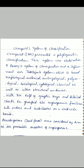Cronquist in 1981 presented a phylogenetic classification. This system was an elaboration of Bessey's system of classification and a refinement over Takhtajan's system, which we have studied in the previous lecture. It is based on morphological, anatomical, embryological, palynological, serological, cytological, chemical as well as ultrastructural evidences.